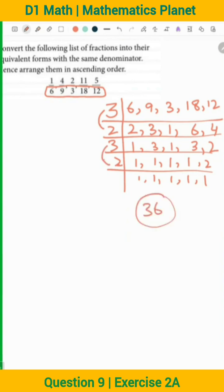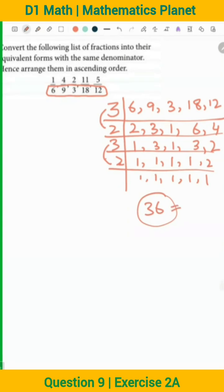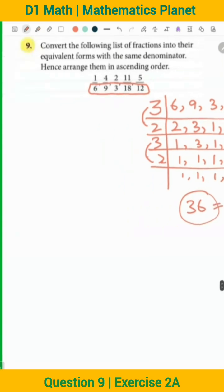So if we make all of the denominators equal to 36, this is something we can do. Okay, so now we have 1 over 6. How to convert into 36? Multiply by 6, multiply by 6, what will I get? 6 by 36. Then I have 4 by 9. How to convert 9 into 36? 9 fours are 36. So we will get 4 times 4 is 16, and 9 times 4 is 36.